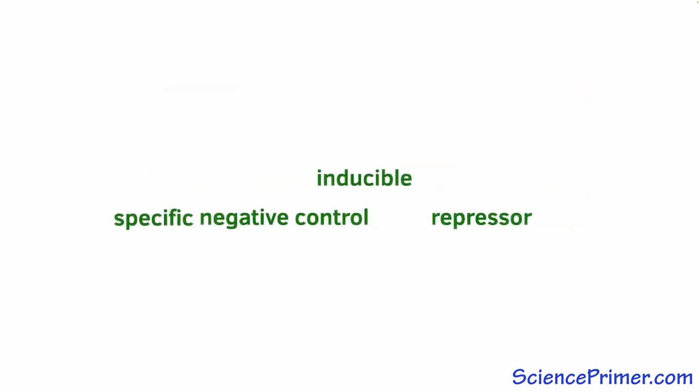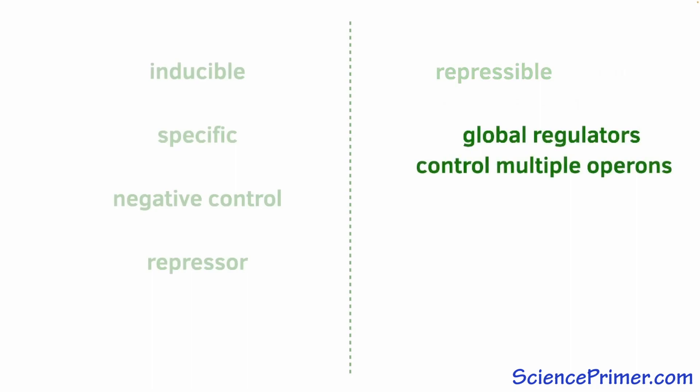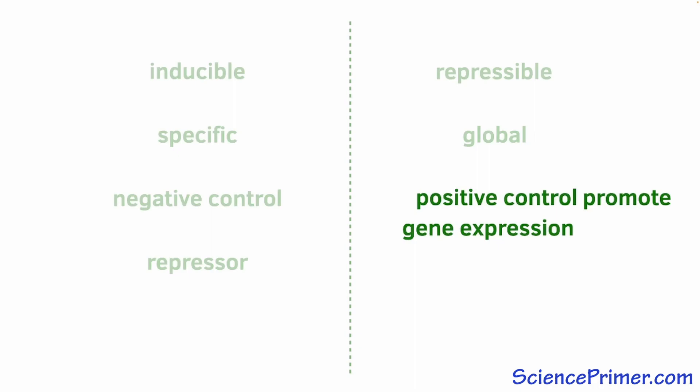Each of these terms are one of a pair of alternative options. In contrast to inducible, genes that are normally on but are turned off under some conditions are called repressible. Regulatory molecules that influence multiple promoters are called global regulators. Regulatory molecules whose activity promotes gene expression exert positive control and are called activators.